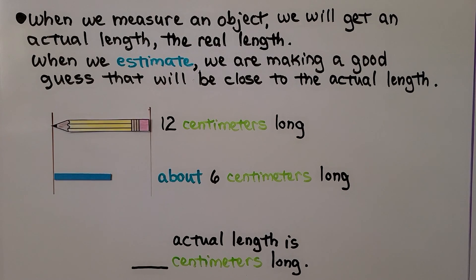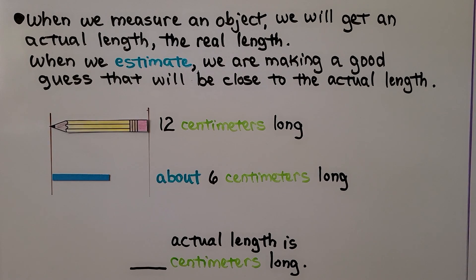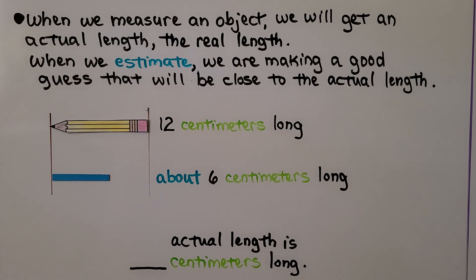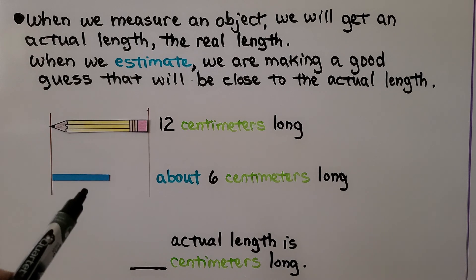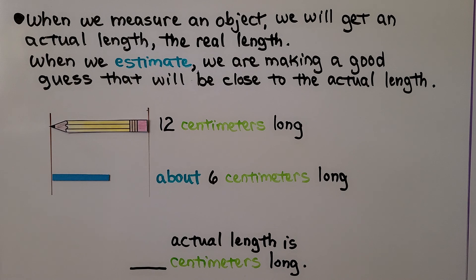When we measure an object, we get an actual length — the real length. When we estimate, we're making a good guess that will be close to the actual length. I measured the pencil at 12 centimeters long. I looked at the blue one and thought, if that's 12, this is about halfway, so it's about 6 centimeters long. But the actual length can be found by doing an actual measurement.